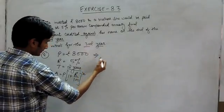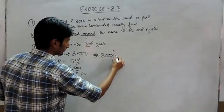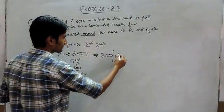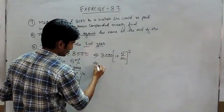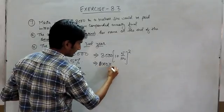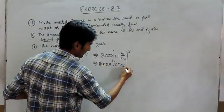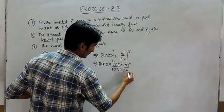Putting the values, principal is 8000, 1 plus rate here is 5%, and time is 2 years. So this will be 8000 multiplied by 105 multiplied by 105 upon 100 into 100.